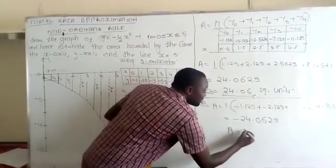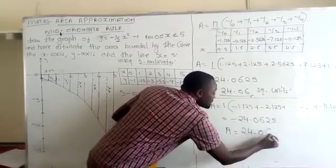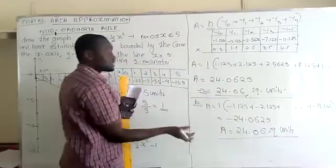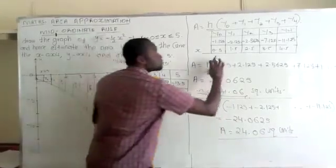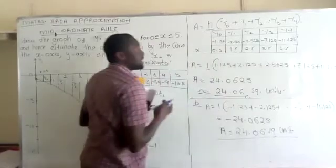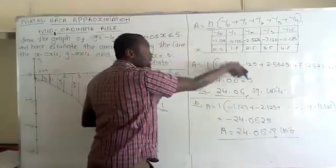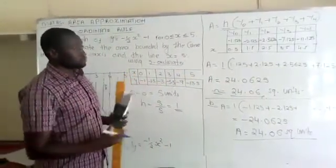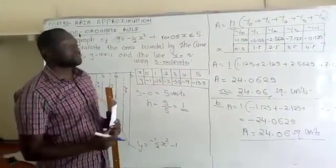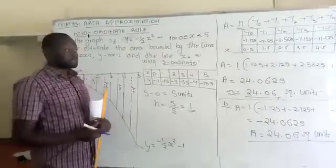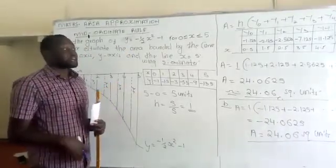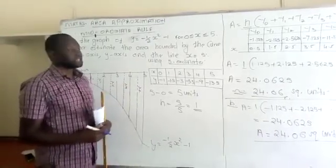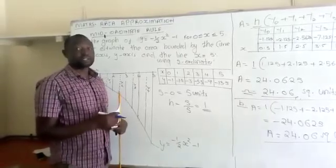Therefore, the area will be 24.06 square units. Please, the simplest way to do it is, if you find all the heights here are negative, then just carry the y-ordinate with the absolute value. I hope you've been able to follow the two examples that we've done on the mid-ordinate rule. I'll be sending some more questions your way so that you put into practice the mid-ordinate rule. Have a nice time.